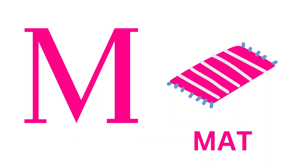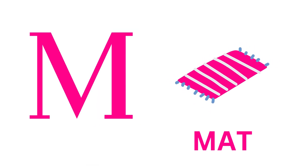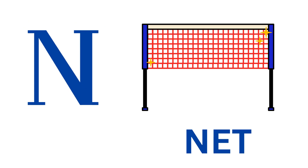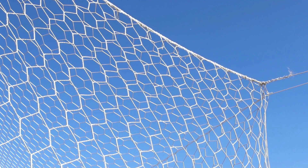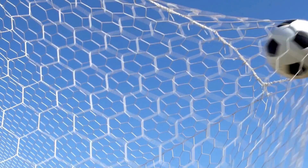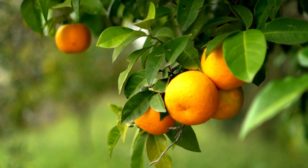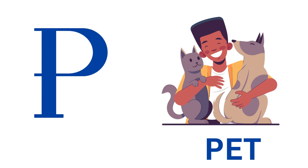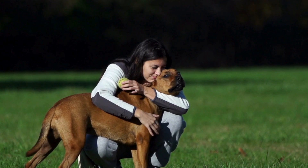M is for Mat, M-M-Mat. N is for Net, N-N-Net. O is for Orange, O-O-Orange. P is for Pet, P-P-Pet.